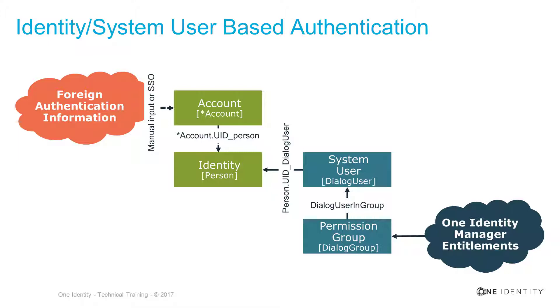A little bit different from the system user authentication we discussed before is the identity system user-based authentication. The idea is to connect the identity — that means the person object — with the system user. The reason is straightforward: we want to avoid that people need an account in Identity Manager, and I'm talking about business people. So I want to use the system user and the permissions it already has as a role. That means I assign the system user to an identity object, which is different from just having an account, because I can use the same account and assign it to many different people.